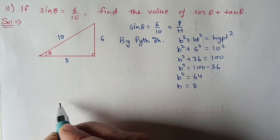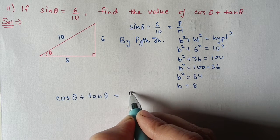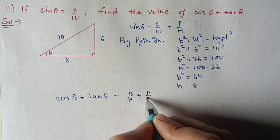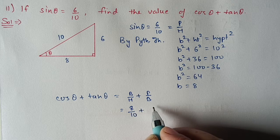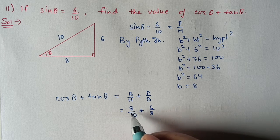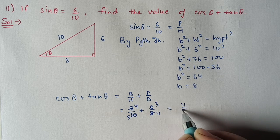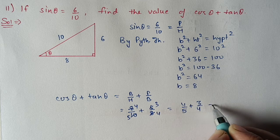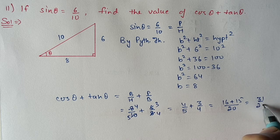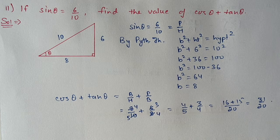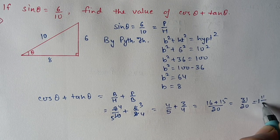Now we find the value of cos θ plus tan θ. cos θ is base upon hypotenuse: 8 upon 10. tan θ is perpendicular by base: 6 upon 8. Simplifying, we get 4 by 5 plus 3 by 4. Taking LCM, that is 16 plus 15 by 20, which equals 31 by 20. You can also express this as the mixed fraction 1 whole 11 by 20.